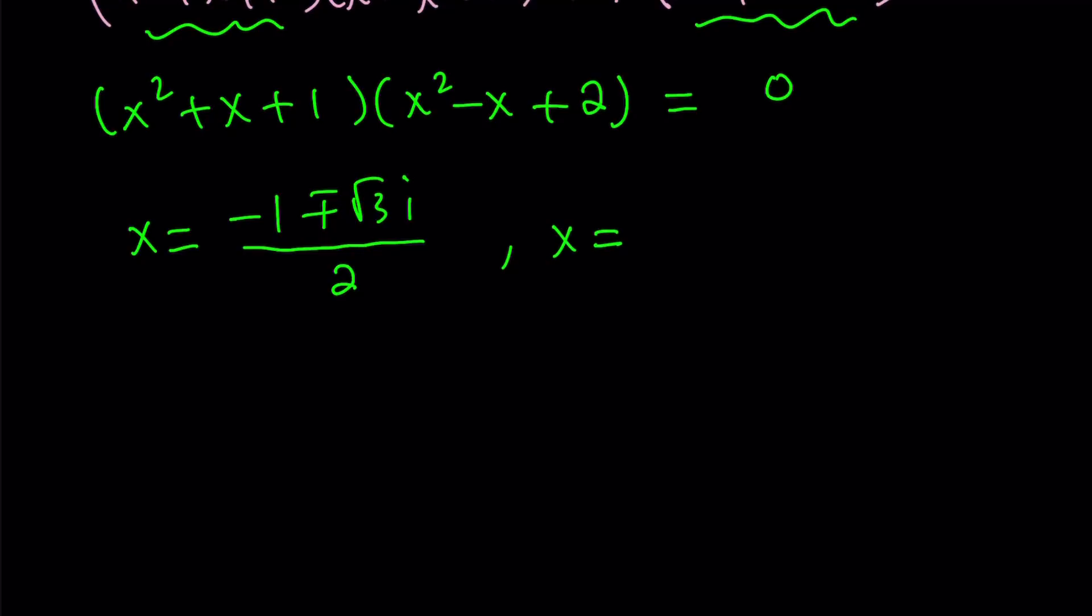Anyways, the other set of solutions is going to be 1 plus minus the square root of 7i divided by 2. So, what do you notice? All the solutions are non-real complex. Great. So, this is the first method. Let's go ahead and talk about the second method.